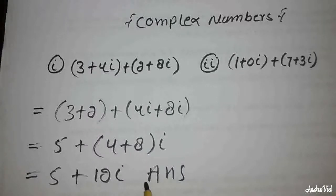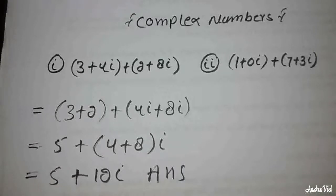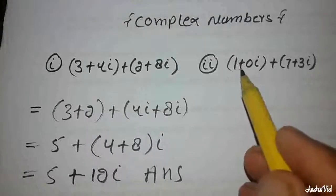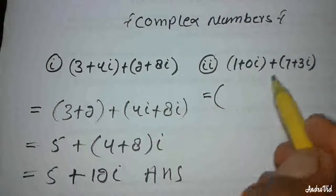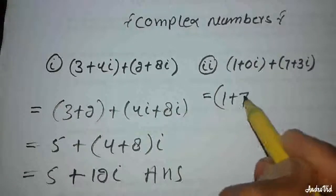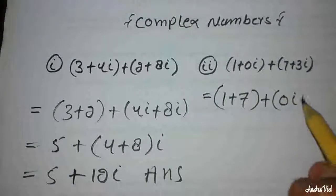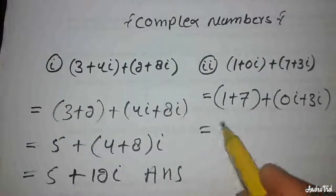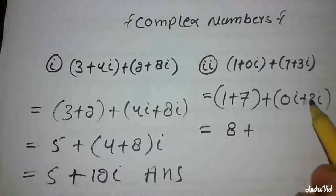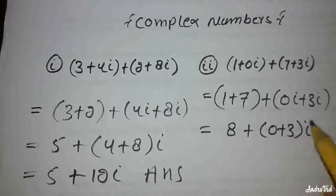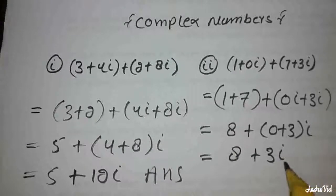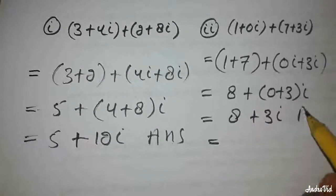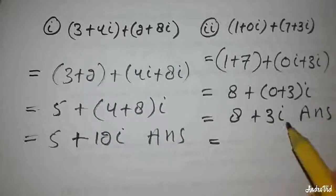A complex number is written as a plus b iota, where a is the real part and b iota is the imaginary part. Example number 2: 1 plus 0 iota, plus 7 plus 3 iota. The real parts: 1 plus 7, and imaginary parts: 0 iota plus 3 iota, giving 8 plus 3 iota.